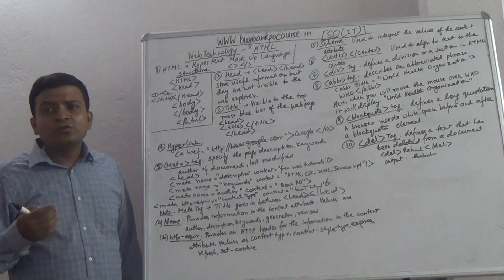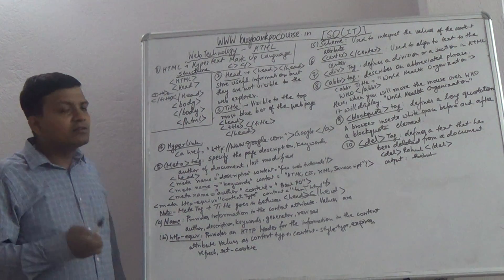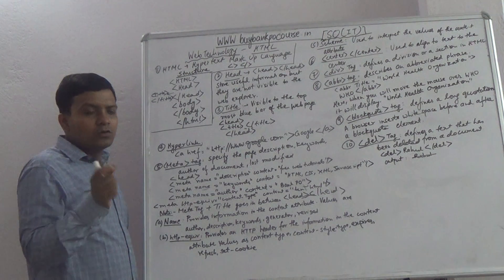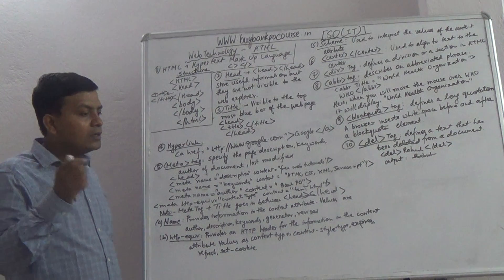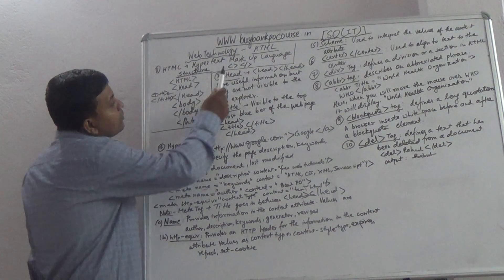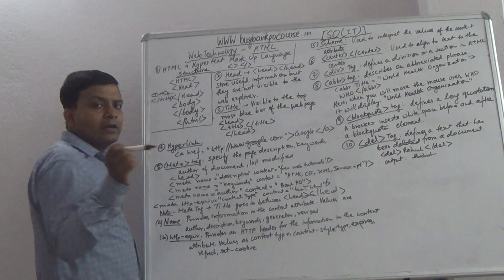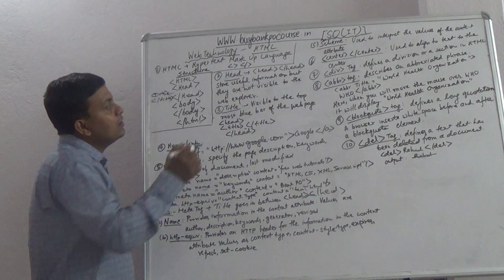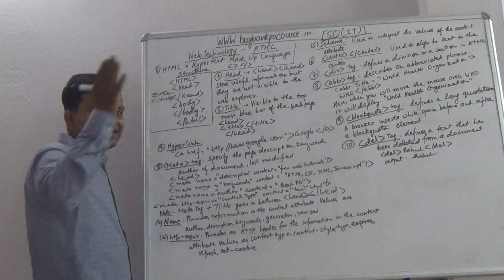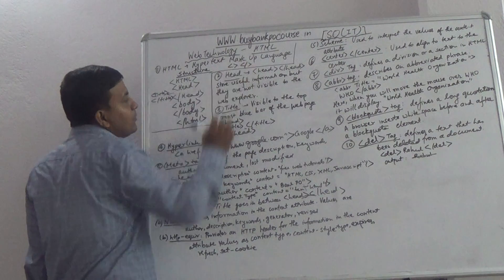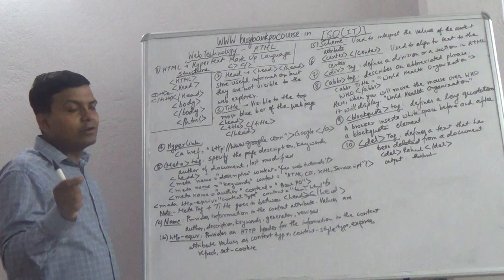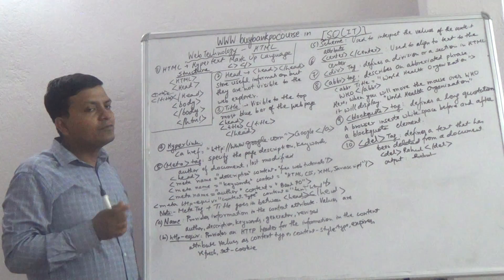HTML full form is known as Hypertext Markup Language. Its structure is a little like this. Every time this bracket — in an arrow shape, you could say — it is written. So opening and closing of arrow: after one slash will be given there and this thing will be written as closing of the brackets.